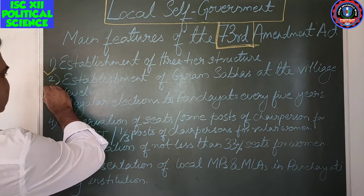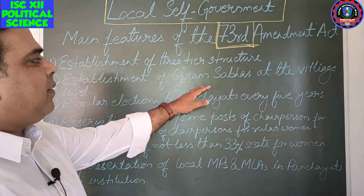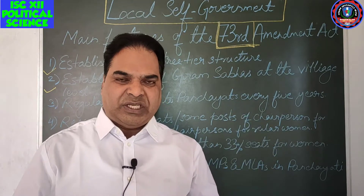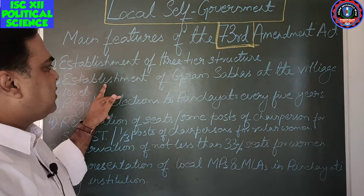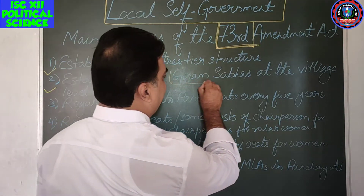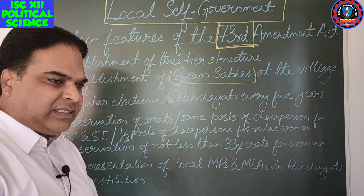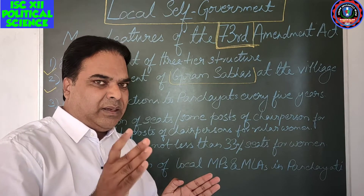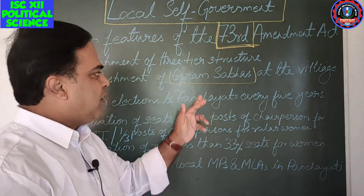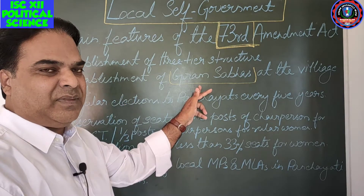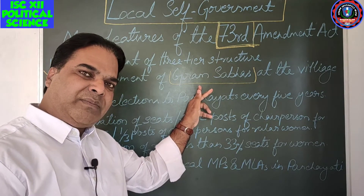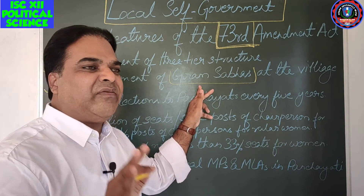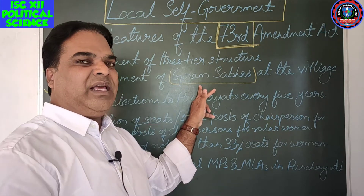The next feature is the establishment of a Gram Sabha at the village level. This is mandatory — establishment of Gram Sabha is clearly required. At the village level, Gram Sabha and gram panchayat are there. If you remove Gram Sabha then the importance of the whole structure will become meaningless, so importance has been given to Gram Sabha. The composition of Gram Sabha includes all the adult members of that village.